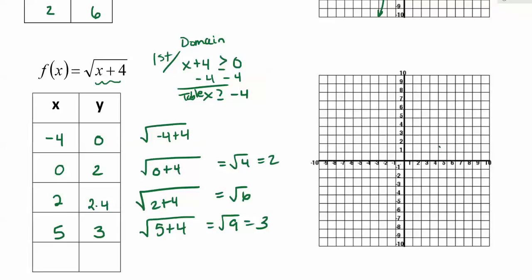If I plug in these points I have negative 4, 0, then 0, 2, then 2, 2.4, and 5, 3. And that's enough points for me to know the shape of the graph. But anytime you have something like a square root you've got to find that beginning point, the vertex of the graph. And you do that by just setting the inside expression greater than or equal to 0.